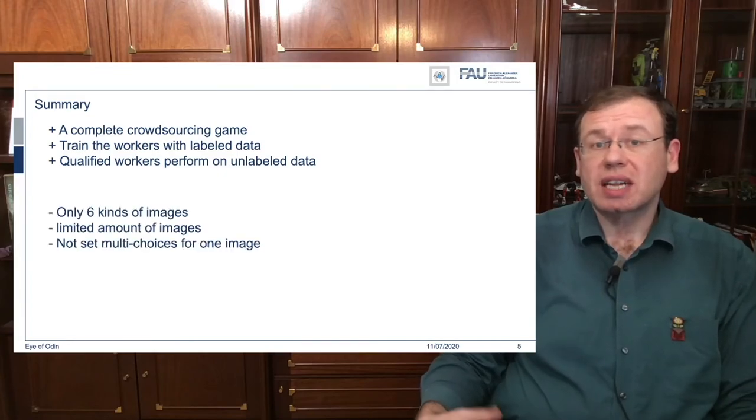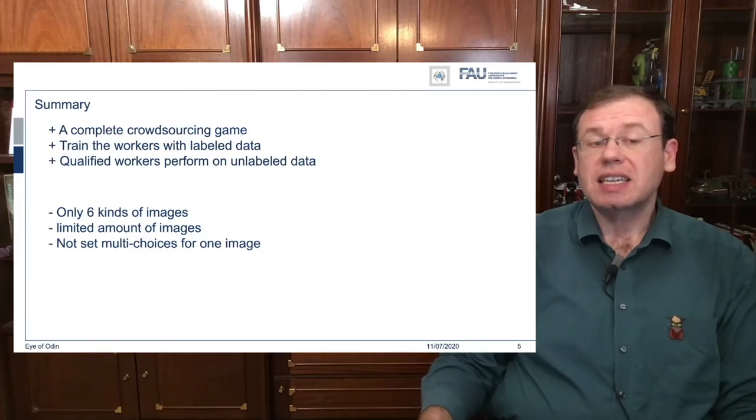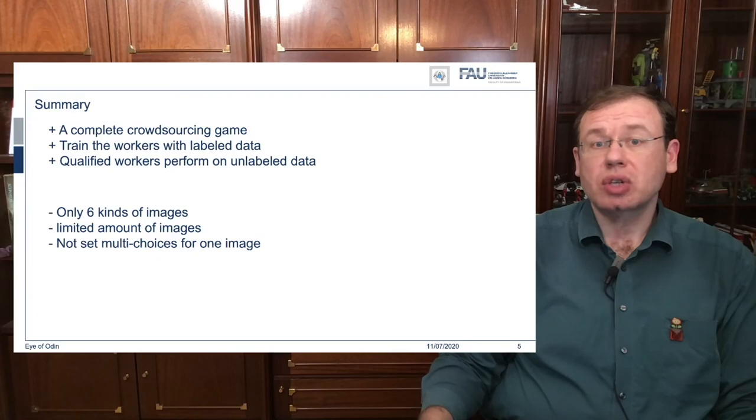Of course this is only the result of a seminar work. So right now we only have six kinds of images. There is only a limited amount of images and for example we can't deal with uncertainties in the labelings. Right now each image has to be one category. In future work of course we want to enable a distribution over the labels.